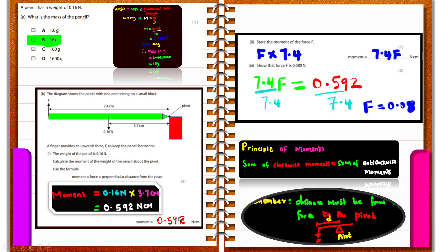The SI unit of moment is newton meter, but you can work in centimeters when appropriate. The moment of force F is F times 7.4, giving 7.4F newton centimeters. To find F, equate clockwise and anticlockwise moments: 7.4F equals 0.592, so F equals 0.592 divided by 7.4, giving a final answer of 0.08 newtons.